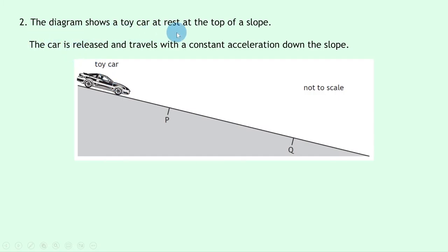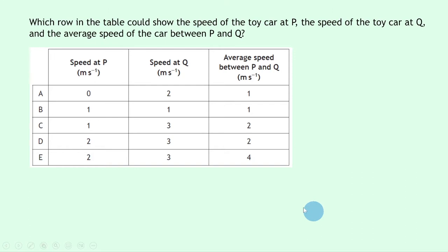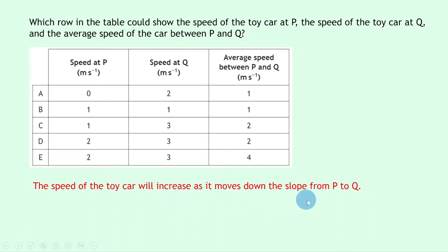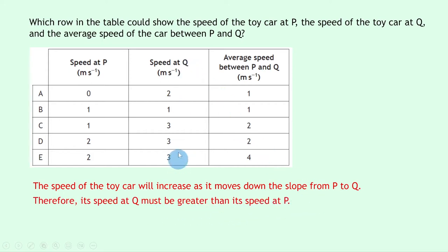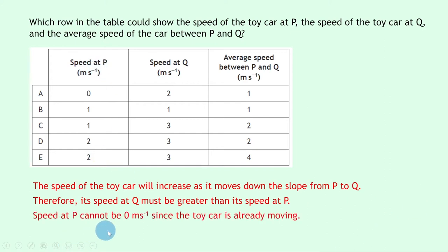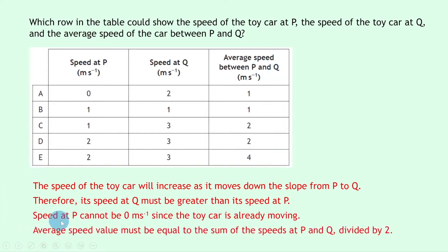Question 2 shows a toy car at rest on top of a slope. The car is released and travels with constant acceleration down the slope, passing points P and Q. We need to identify the speed at P, speed at Q, and average speed between P and Q. The speed increases as the car moves down from P to Q, so the speed at Q must be greater than at P. Also, the speed at P cannot be zero since the car is already moving when it reaches P.